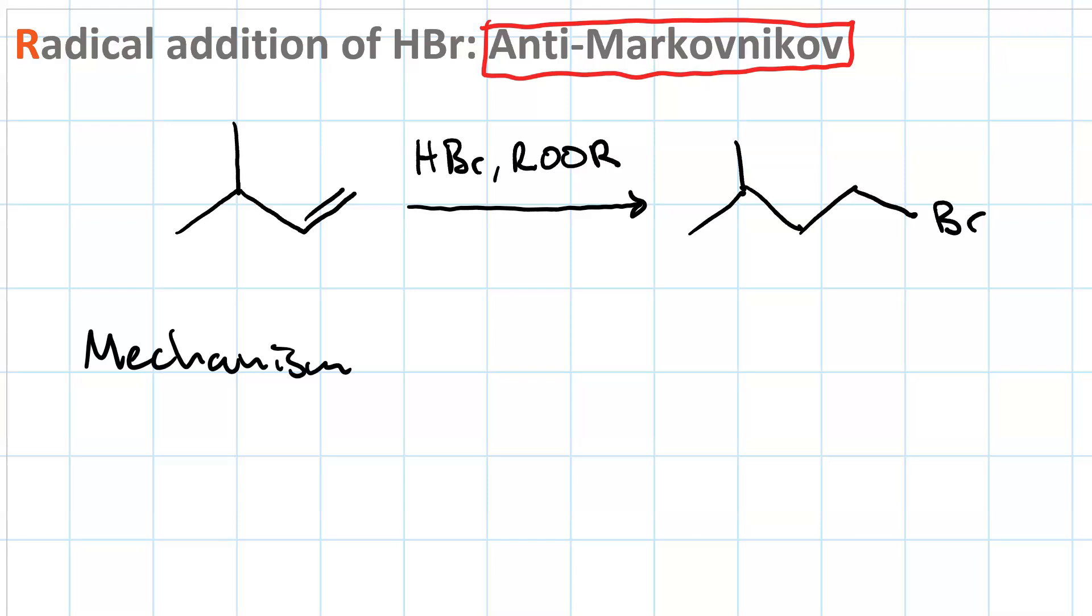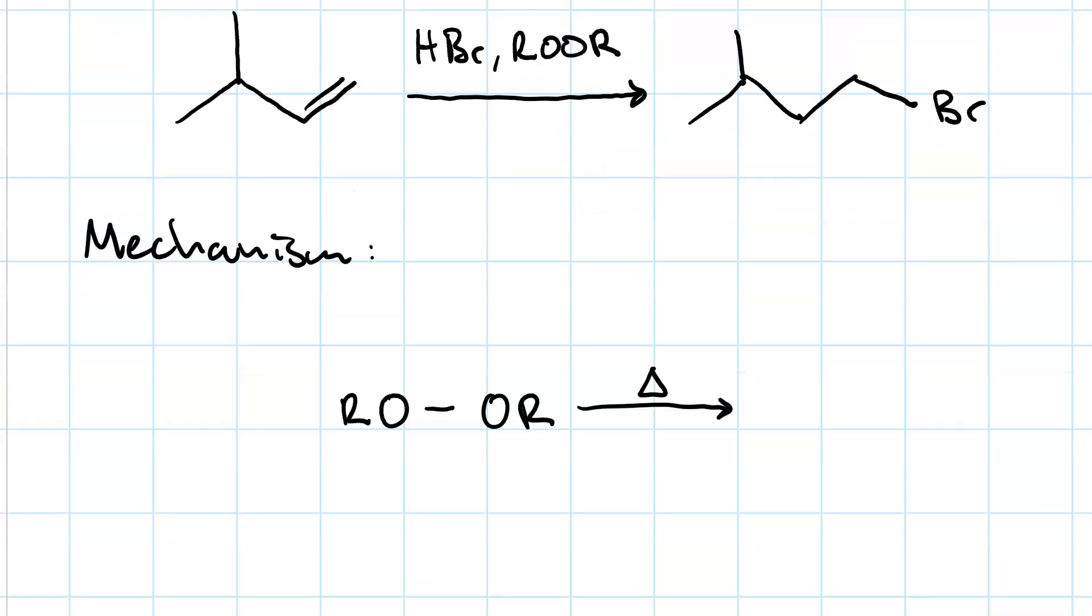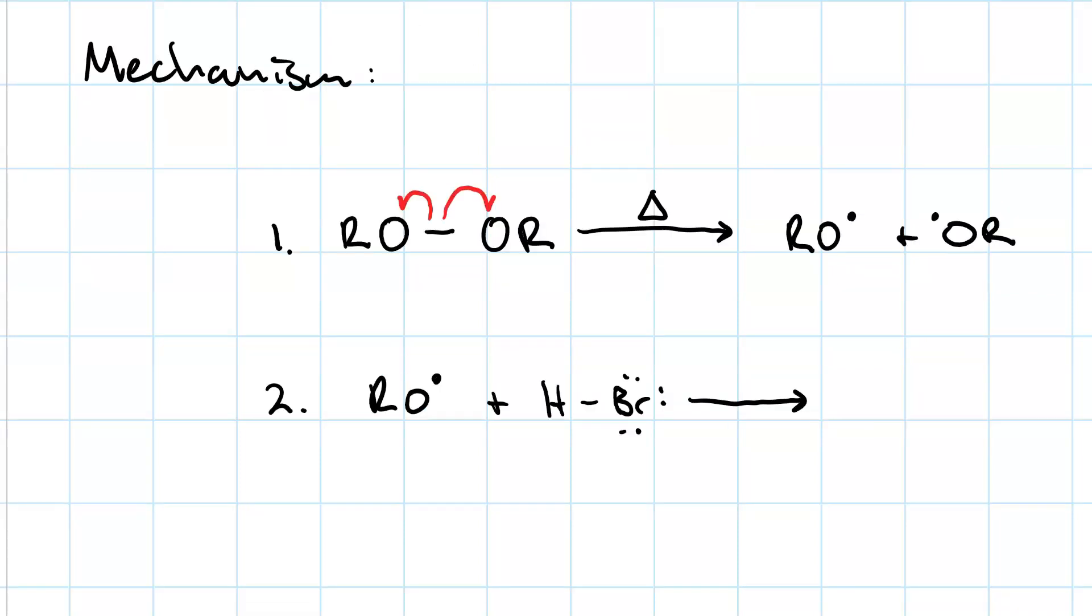Let's look at the mechanism to see how we can explain this. In my first step, heating the peroxide causes homolytic cleavage to give me two alkoxyl radicals. So this is my first initiation step. In my second initiation step, an alkoxyl radical does hydrogen abstraction on the HBr, creating an alcohol and a bromine radical.